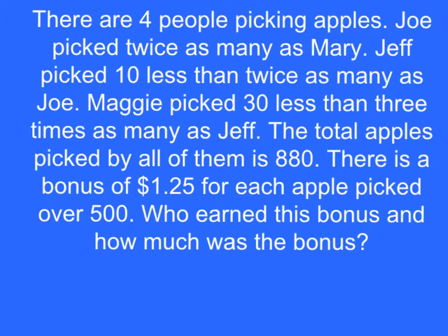There are four people picking apples. Joe picked twice as many as Mary. Jeff picked 10 less than twice as many as Joe. Maggie picked 30 less than three times as many as Jeff. The total apples picked by all of them is 880. There is a bonus of $1.25 for each apple picked over 500. Who earned this bonus and how much was the bonus?